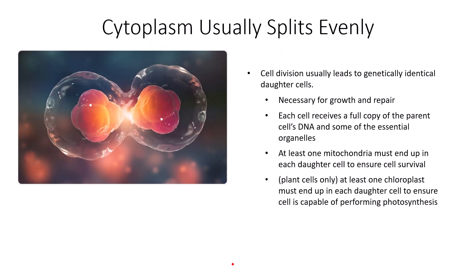The cytoplasm usually splits evenly, and cell division usually leads to genetically identical daughter cells. Cell division is necessary for growth and repair. Each cell receives a full copy of the parent cell's DNA, and essential organelles must be distributed — at least one mitochondrion must end up in each daughter cell to ensure survival, since mitochondria are instrumental in aerobic respiration, which produces ATP. Plant cells must also produce at least one chloroplast, which is the photosynthetic organelle.